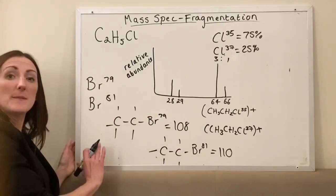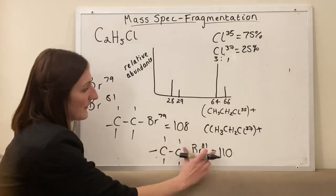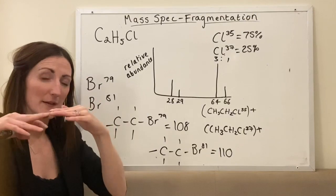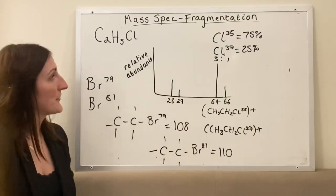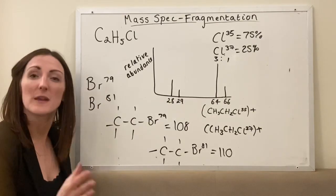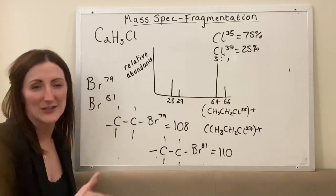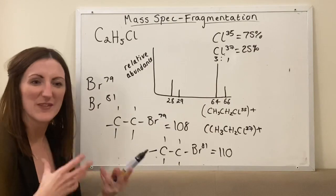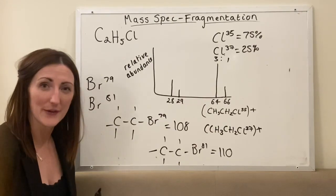With bromine, the two isotopes are pretty much 50-50, so you'd find that the relative intensity of those peaks would be approximately the same. Hopefully that's a little clearer — when dealing with fragmentation involving chlorine or bromine, just remember what we learned about different isotopes. You're thinking of the different combinations of atoms you can get and just adding them together.